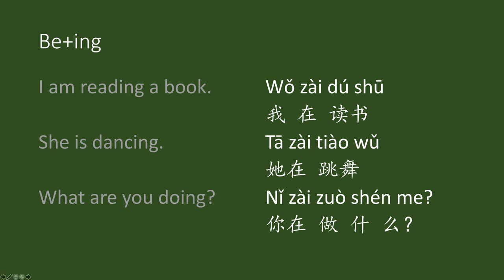我在读书. We can say that 我 is 'I', 读书 is 'read a book', and -ing is zài in Chinese. So zài is actually showing the tense. In Chinese, the verbs don't change their forms for tenses, but we do have words like zài to indicate tense. zài always indicates the present ongoing tense.